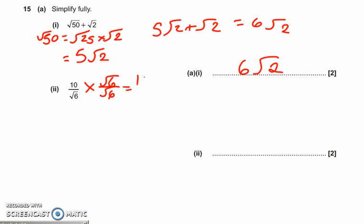That gives us on the top 10 root 6. On the bottom, root 6 times root 6. It cancels to make 6.